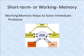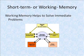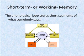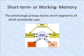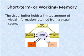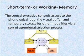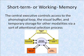Another name for short-term memory is working memory, in that it acts to solve immediate problems. Within the short-term memory system, the phonological loop stores short segments of what somebody says. The visual buffer holds a limited amount of visual information retained from a visual scene. The central executive controls access to the phonological loop, the visual buffer, and temporary storage for other modalities via a sort of attentional selection process.